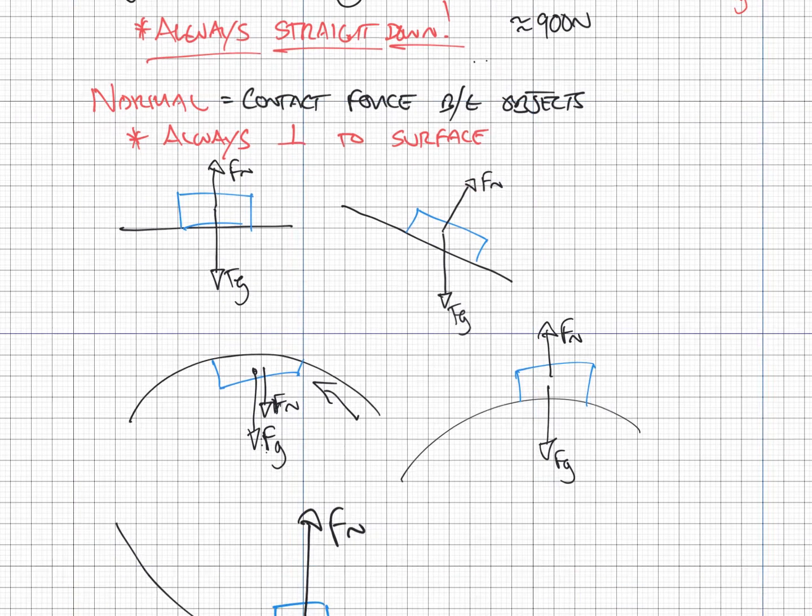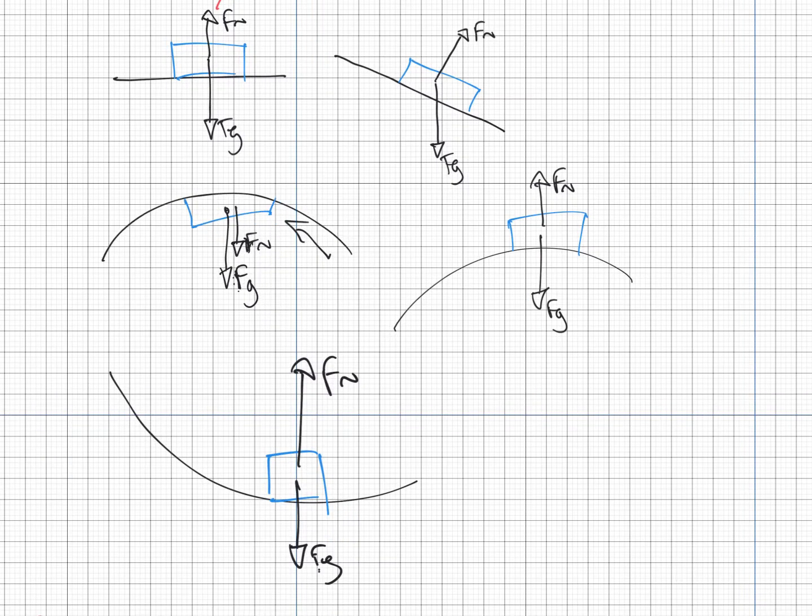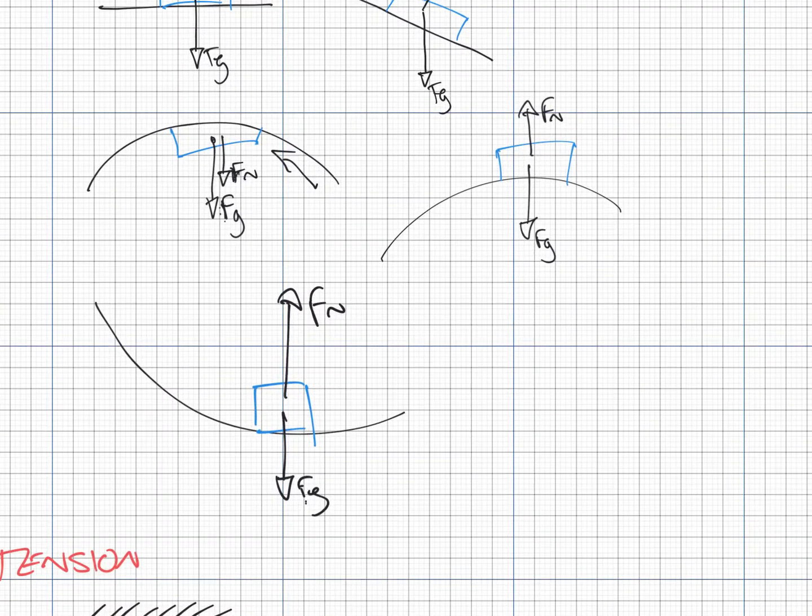Going around roller coasters, the normal force changes. Underneath a loop, the cart contacts the ramp and it pushes down. Over top of a hill, the normal force pushes up. At the bottom of a hill, it also pushes up. It's always perpendicular to wherever the surface is. We signify it as F_N or just capital N.